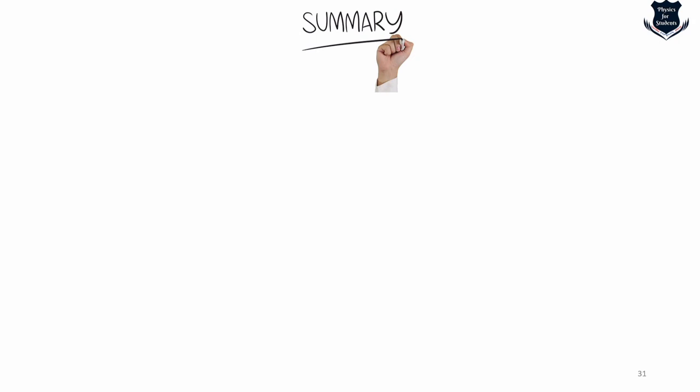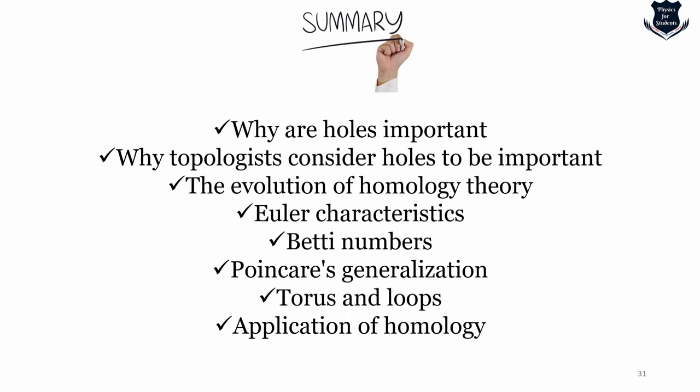That's all for today's video. I have given you an idea of the history and evolution of homology through easy and illustrative examples. To summarize: we understood why holes are important, why topologists consider holes to be important, how the evolution of homology started with Euler, Betti, Emmy Noether, and how Henri Poincaré generalized it, what tori and loops are, and the application of homology with De Silva and Robert Ghrist.